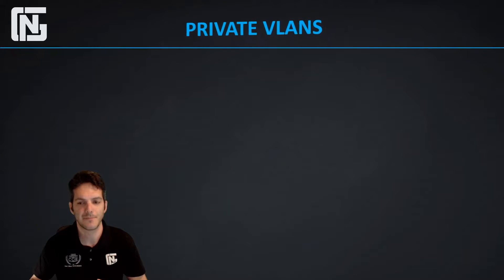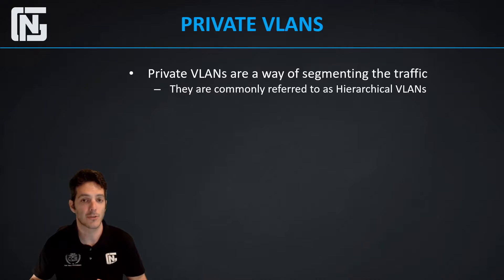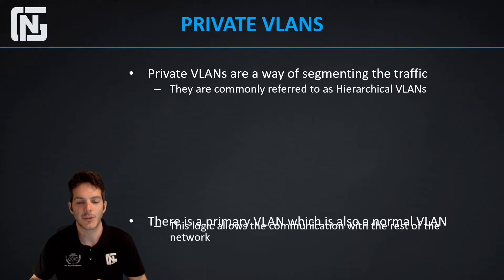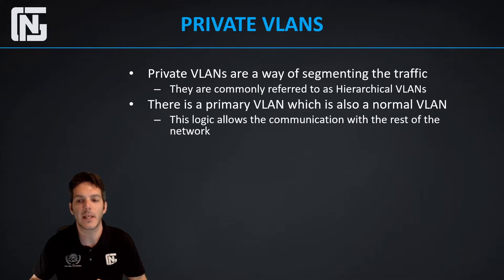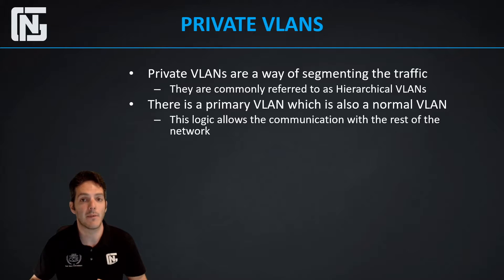Private VLANs are a bit different. They are a way of segmenting traffic throughout the network, also commonly referred to as hierarchical VLANs. There is a primary VLAN, which is also a normal VLAN, and this logic allows communication with the rest of the network. If you did not have this in place, traffic inside of the private VLAN infrastructure would not be able to communicate with the rest of the physical infrastructure you have deployed.